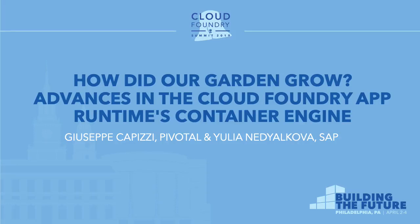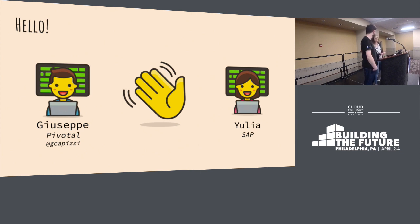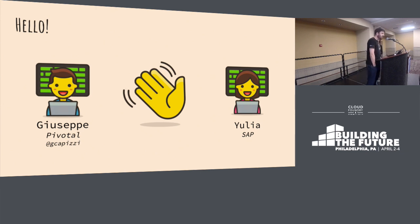I'm Giuseppe, and I work for Pivotal. And I'm Julia, and I work for SAP. We're here to talk to you about how Garden has grown in the past few months.